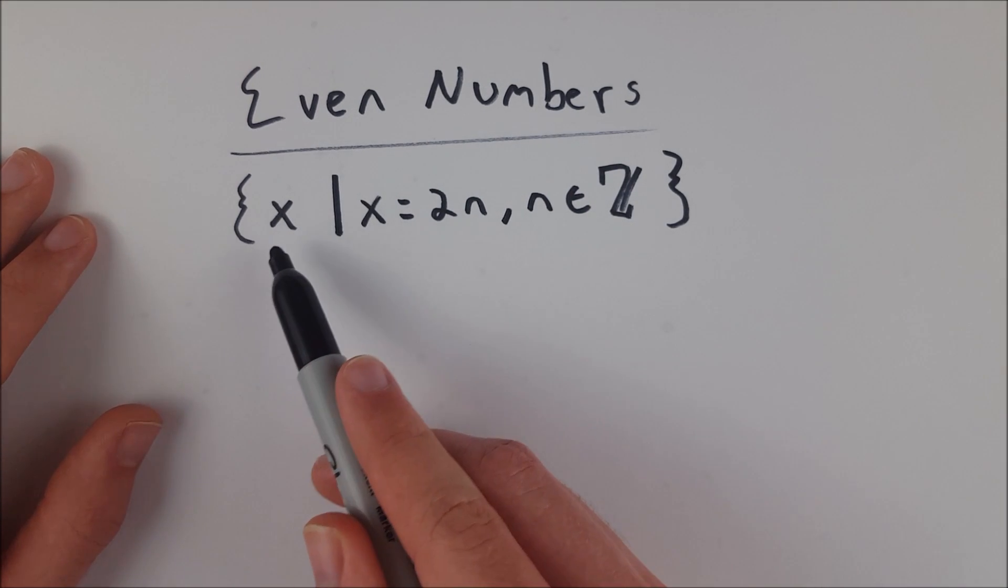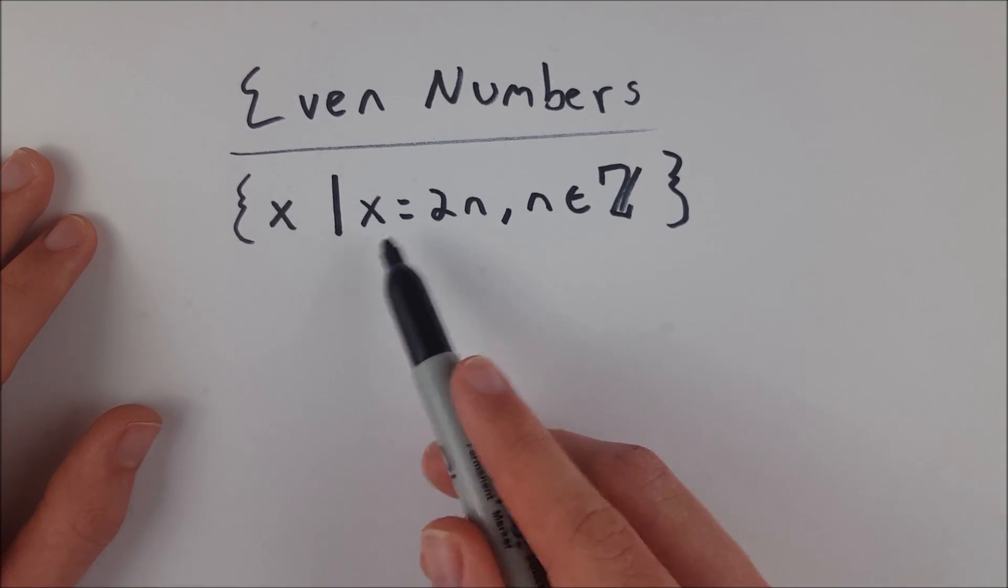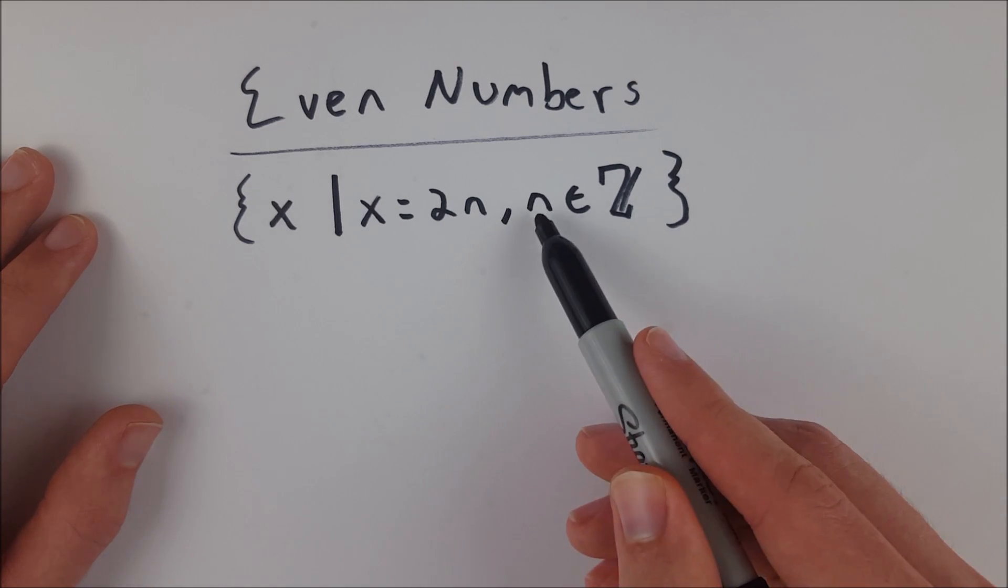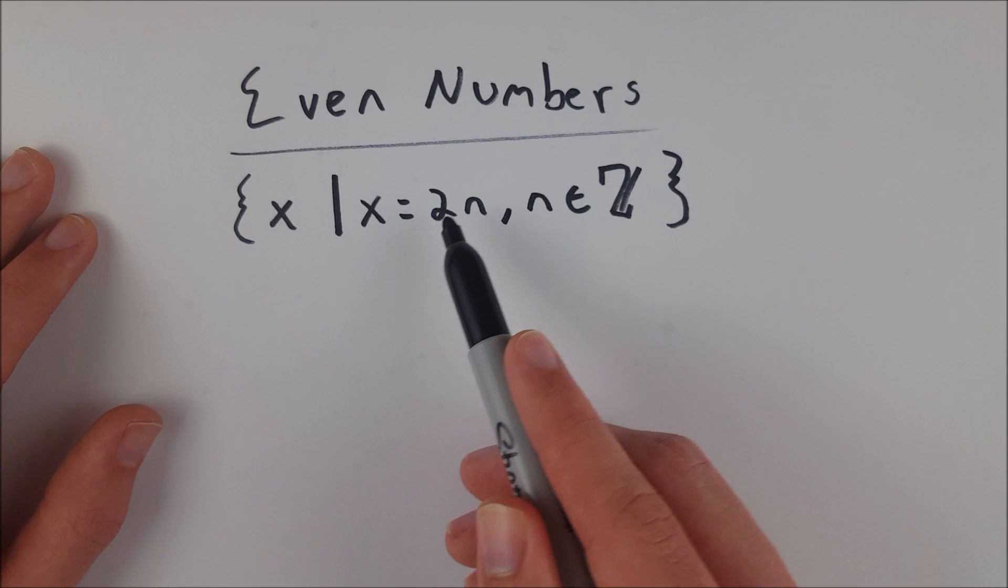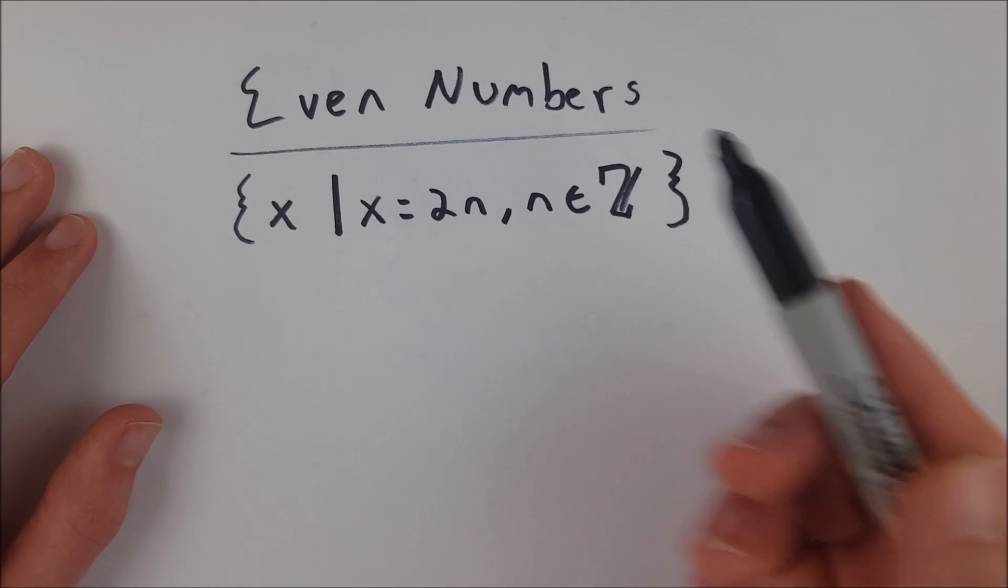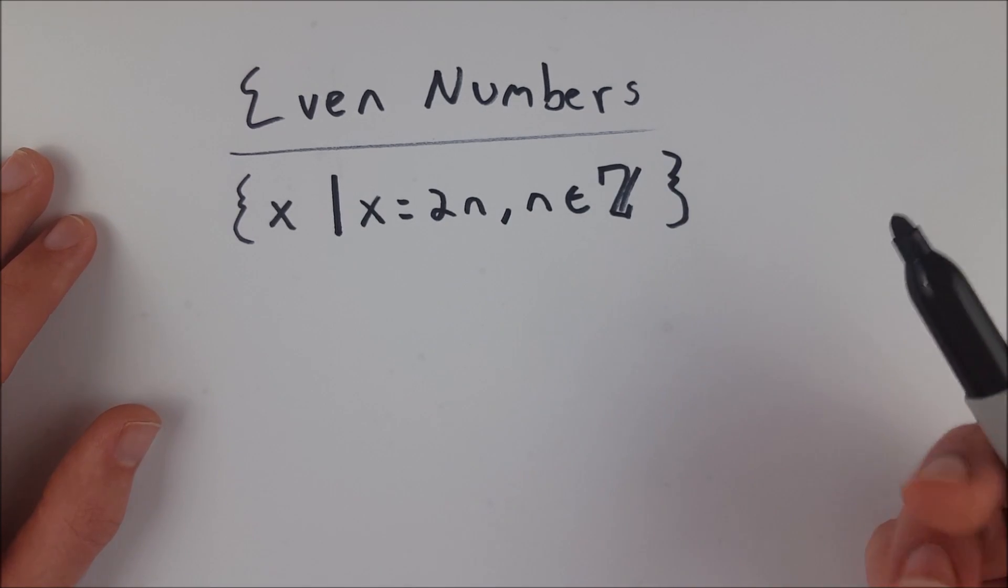And this is read as all numbers x, such that x equals 2n, where n is an element of the integers. So you can see, this is x is basically just every multiple of 2, and that is the even numbers.